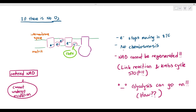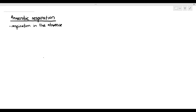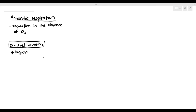Glycolysis can continue even in the absence of oxygen. The answer to how that's possible is due to a process known as anaerobic respiration. Anaerobic respiration is respiration in the absence of oxygen. If you have done O-level biology, you would be told that anaerobic respiration happens only in the cytoplasm and does not involve the mitochondrion at all.